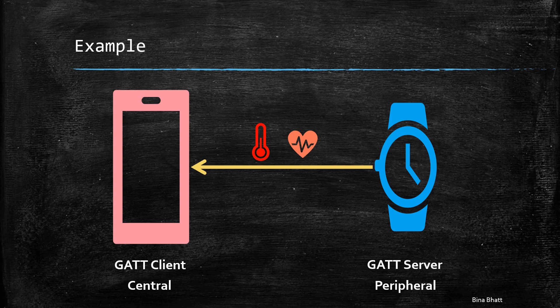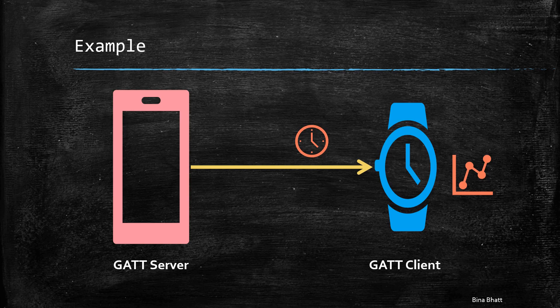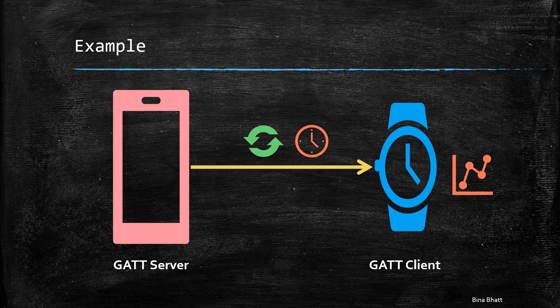However, the watch can request the exact time for data timestamping and adopt the role of the GATT client. The phone will be the GATT server in this case. Also, as a server, the phone can send across software updates to the watch.